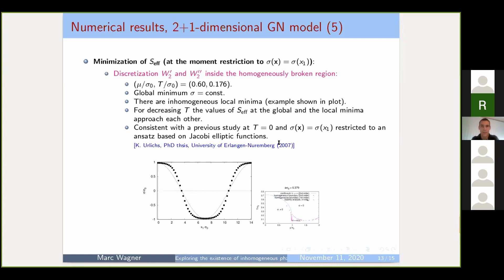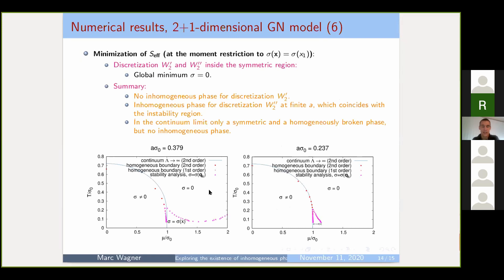Finally, we also checked the homogeneously symmetric region and tried to find anything interesting, but there's nothing—the global minimum is just sigma equals zero. So in summary, for the discretization w' there's no inhomogeneous phase. For w'' there's an inhomogeneous phase at finite lattice spacing which coincides with the instability region from the stability analysis, but in the continuum limit it goes away and there's only a symmetric and a homogeneously broken phase.